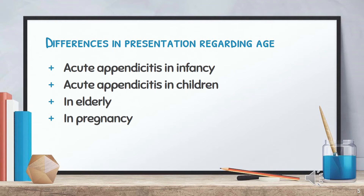Age-specific presentations: In infancy, acute appendicitis is very rare, but if it occurs, it has an 80% chance of perforation with high mortality. In children, localization is not present, so peritonitis occurs early, requiring early surgery; dehydration and septicemia are common. In the elderly, gangrene and perforation are common because of lax abdominal wall, poor localization, and peritonitis sets in early.